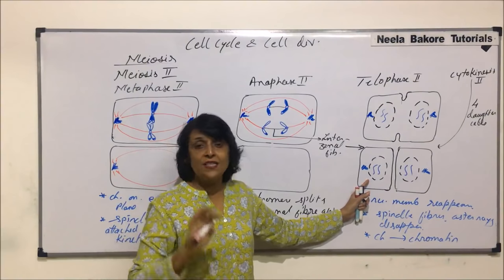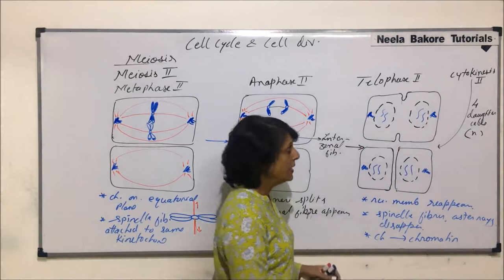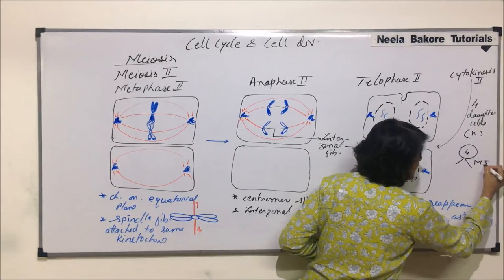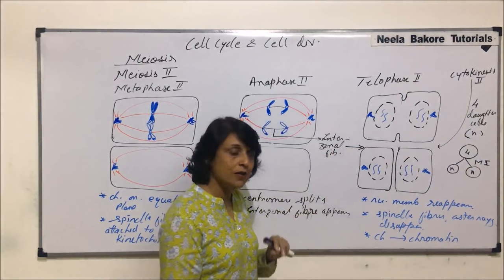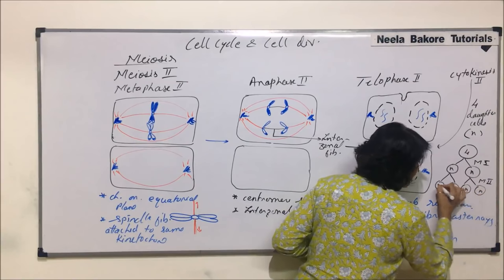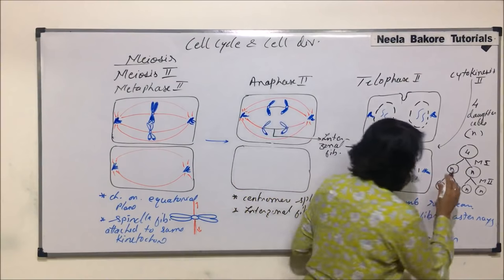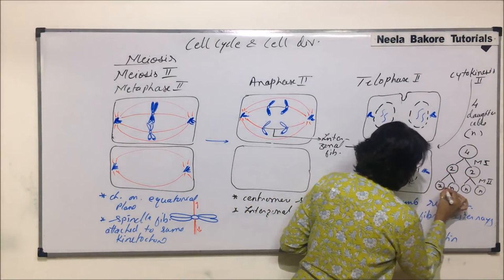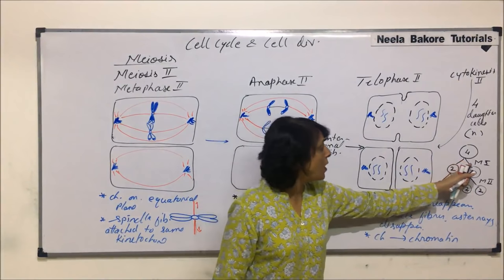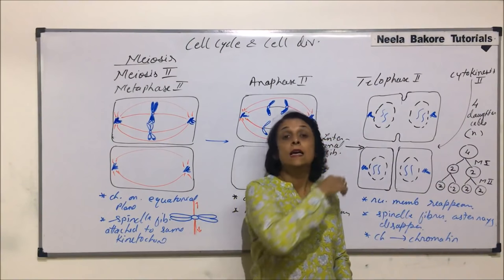All four daughter cells have only two chromatin fibers or chromosomes. That means we started with a parent cell having four chromosomes. Now we have four daughter cells having two chromosomes — so they are haploid. We started with four chromosomes in the parent cell. After meiosis 1, we got two daughter cells having N and N — that was reductional division. After meiosis 2, we are again getting four daughter cells having haploid number of chromosomes. Meiosis 1 is reductional division because chromosome number from 4 has been reduced to 2. From 2, we are again getting two daughter cells having two chromosomes — so meiosis 2 is equational division.